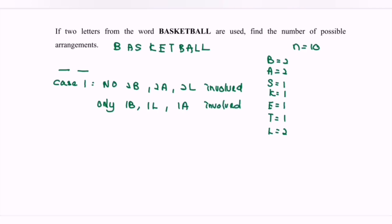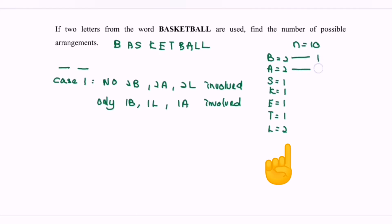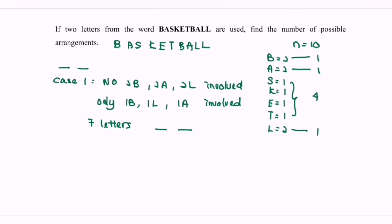In this situation, we only allow one letter each for L, B, and A. So the available distinct letters are B, A, S, K, E, T, and L — that gives us seven letters in total. Case 1 means two B's, two A's, and two L's are not allowed.